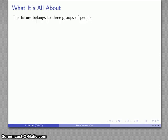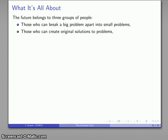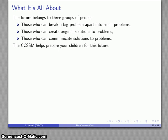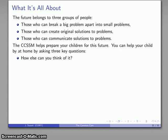Let's put a summary on all of this. The future is going to belong to three groups of people. Those who can break a big problem apart into smaller problems. Those who can create original solutions to problems. And those who can communicate solutions to problems. The Common Core State Standards in Mathematics help prepare your child for this future. And again, you can help your child at home by asking three key questions. How else can you think about it? How can you break this into smaller problems? What does it mean? And why did they do that? And these are three key things to think about when you see those Common Core worksheets being sent home with your kids.